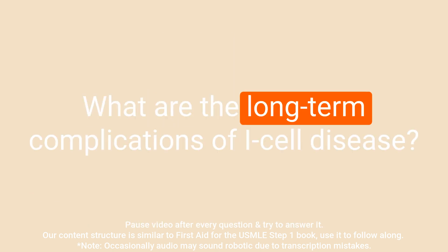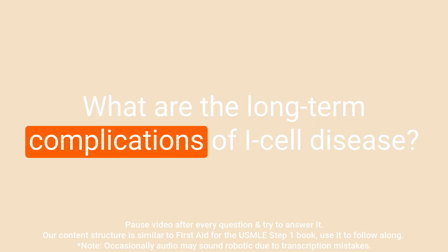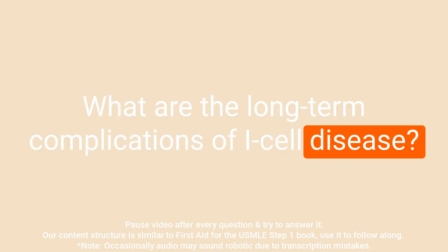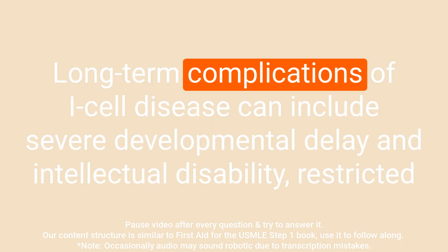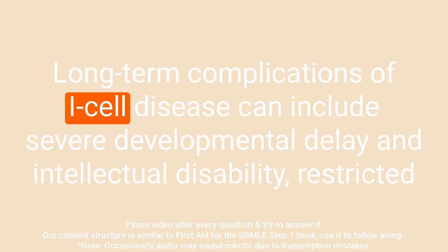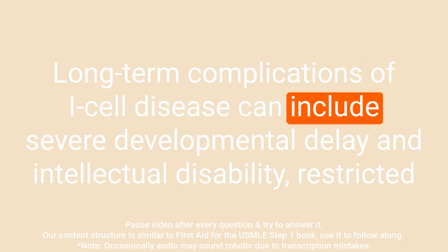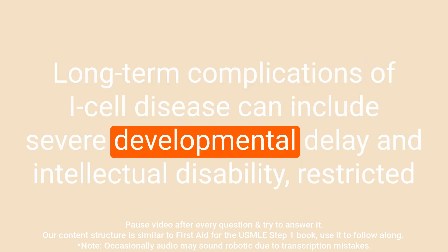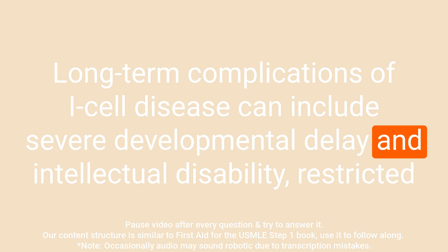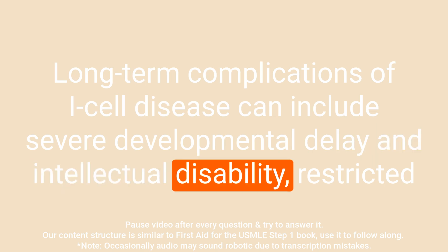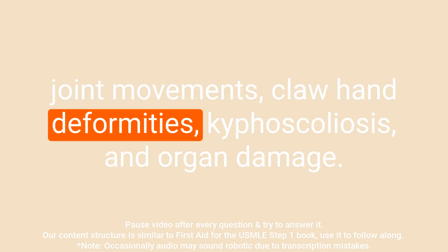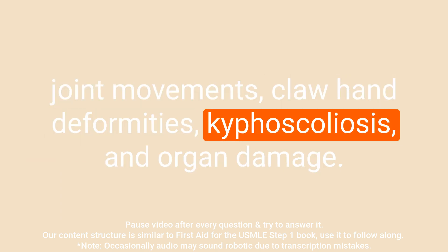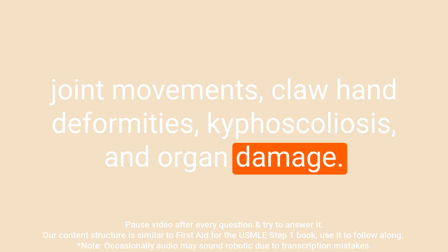Question: What are the long-term complications of I cell disease? Answer: Long-term complications of I cell disease can include severe developmental delay and intellectual disability, restricted joint movements, claw hand deformities, kyphoscoliosis, and organ damage.